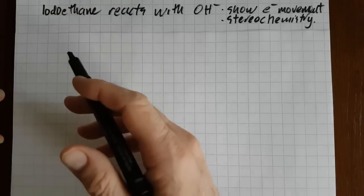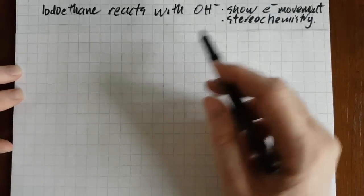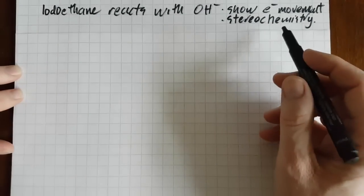So this is a recent four-point IB question. Iodoethane reacts with the hydroxide ion, show the movement of electrons and the stereochemistry.